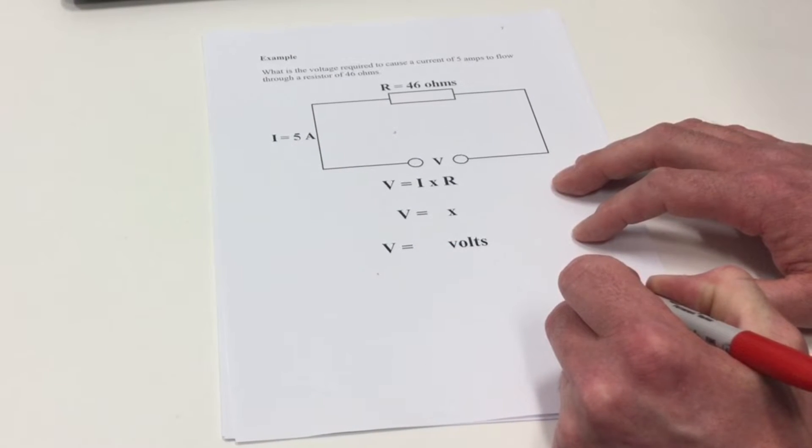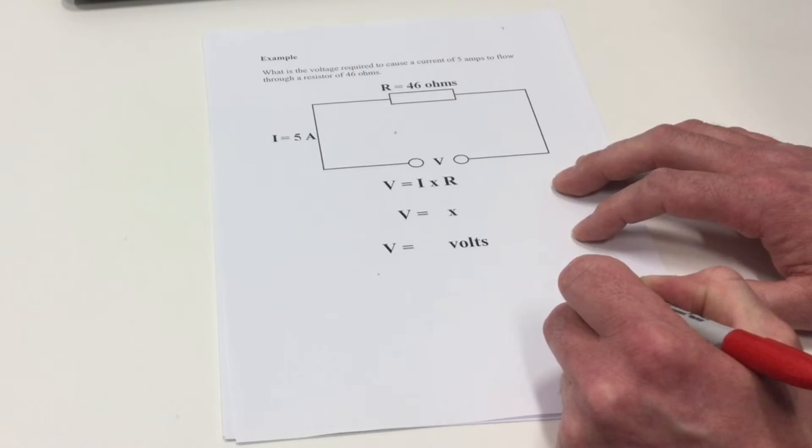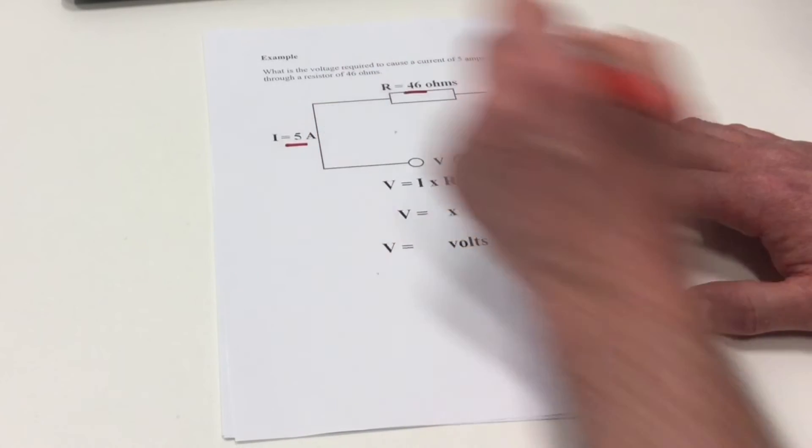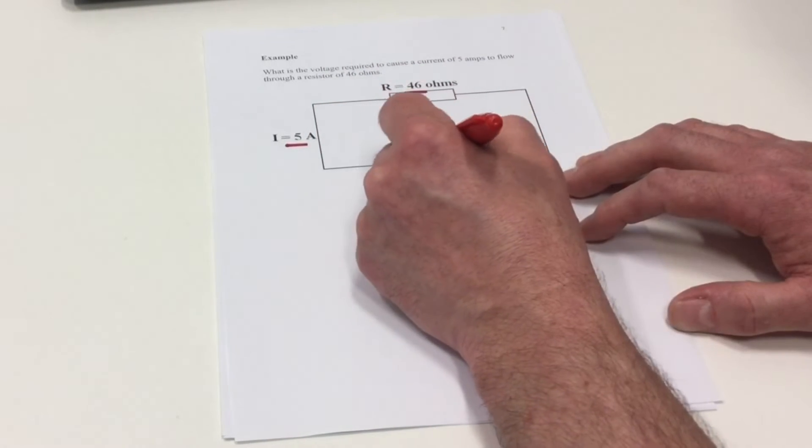In our first example the question requires us to find the voltage when the circuit has a current of 5 amps flowing through a resistor rated at 46 Ohms. So we currently know I and we currently know R and we're looking to find V.